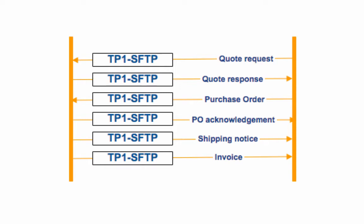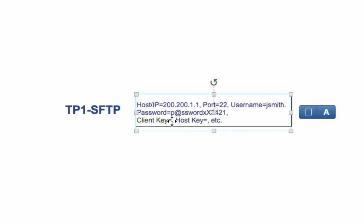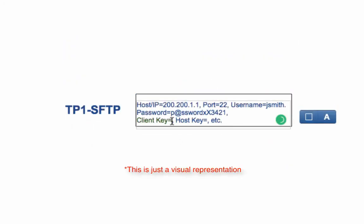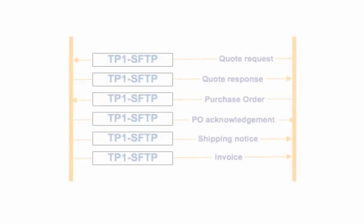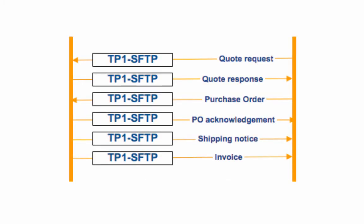What if your trading partner changes a credential for that particular SFTP service? All you need to do is edit the trading partner and enter the credential that was changed. It's done in a single place instead of on every transaction. It's simple, fast, and significantly brings down chances of human errors.